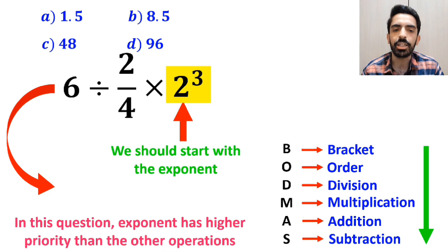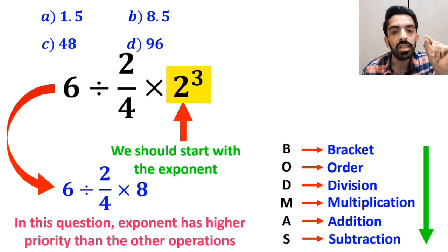So, instead of the original expression, we can write 6 divided by 2 over 4 multiplied by 8.